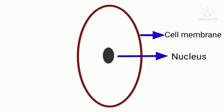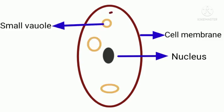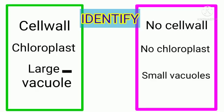nucleus is present. Small vacuoles are present. Cytoplasm is the matrix inside the cell. No cell wall, no chloroplast, and smaller vacuoles are peculiarities of animal cell. Can you identify the cells with the following peculiarities?